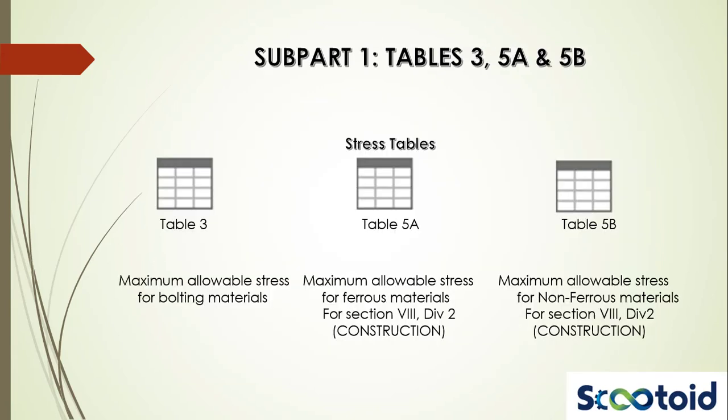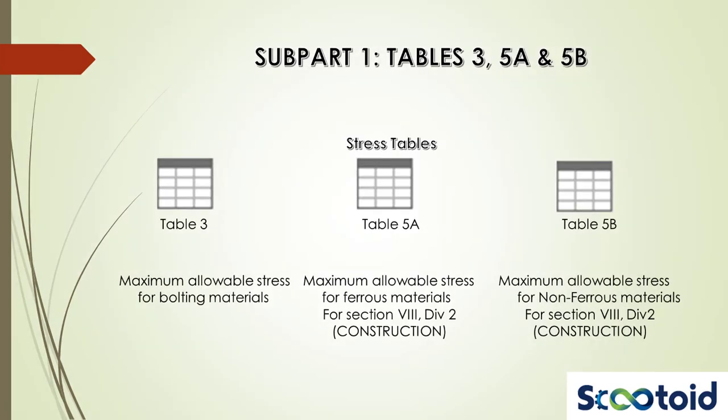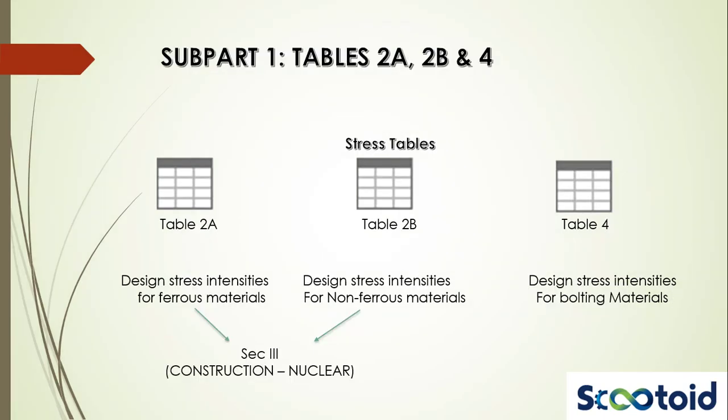Like tables 1a and 1b, tables 3, 5a and 5b are also stress tables. Table 3 provides maximum allowable stresses for bolting materials. Table 5a gives maximum allowable stresses for ferrous materials while table 5b gives the same for non-ferrous materials. Both these are applicable to Section 8, Division 2, which includes alternate rules for the construction of pressure vessels.